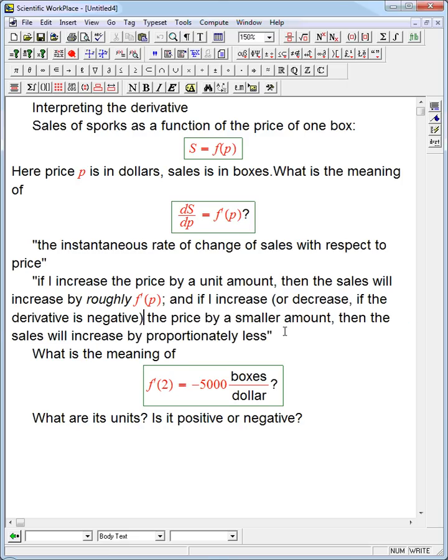A negative derivative means that when I increase, when I have a run that's positive, the rise will be negative. And so this is going downhill. We've seen that already in graphs. So what would this mean? We've got the units taken care of. It's boxes per dollar. And the question is, what about the positive or negative? We've got a negative example.